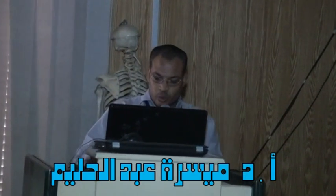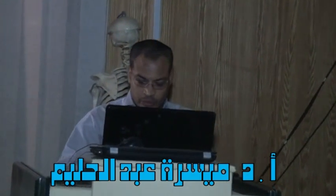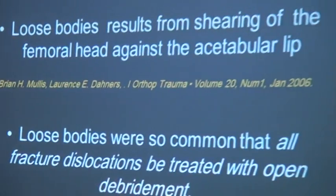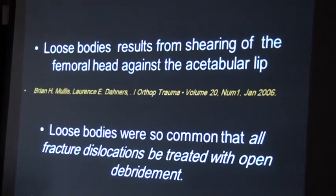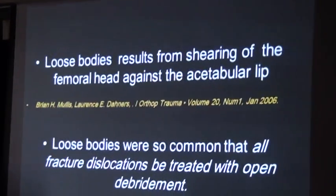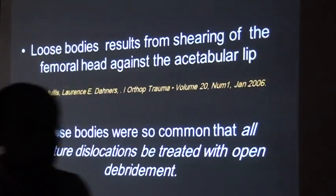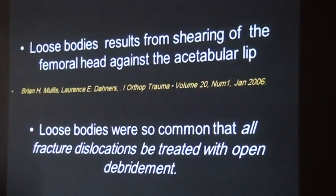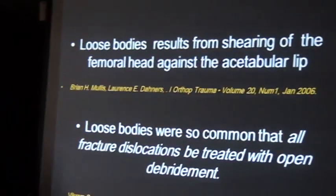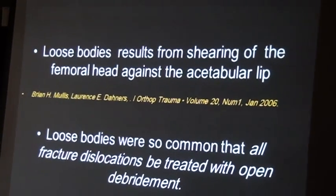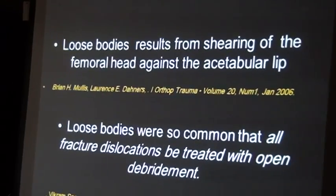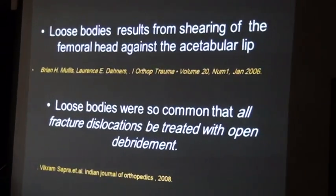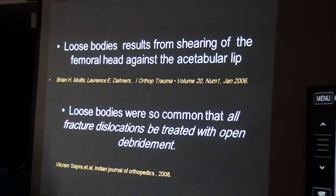The role of hip arthroscopy after traumatic dislocation of the hip. Graham in 2026 found that loose bodies result from shearing of the femoral head against the acetabular labrum. Loose bodies were so common that he recommended all fracture dislocations be treated with open reduction.